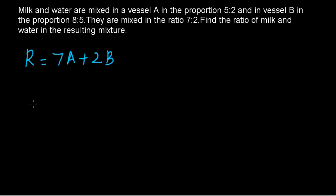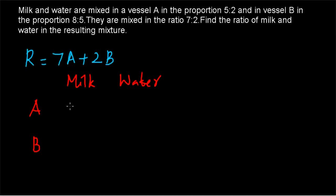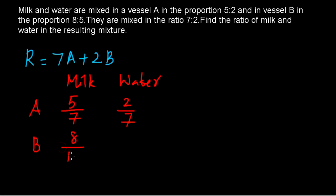We have to find the milk-to-water ratio in the resulting mixture. Forming a table as before for A and B: the content of milk in A is 5 divided by (5+2), which is 5/7. The content of water in A is 2 divided by (5+2), which is 2/7. The content of milk in B is 8 divided by (8+5), which is 8/13. The content of water in B is 5 divided by (8+5), which is 5/13.